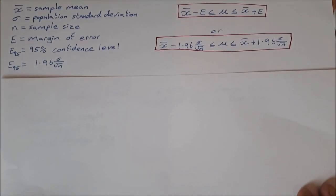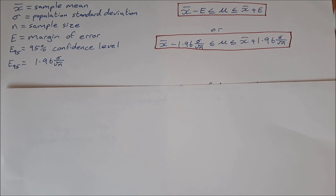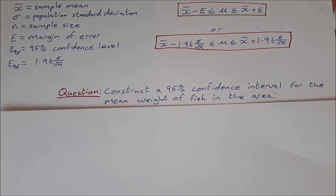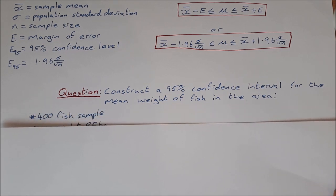Let's take a look at an example. Construct a 95% confidence interval for the mean weight of fish in the area. We're given this information: we have a 400 fish sample.